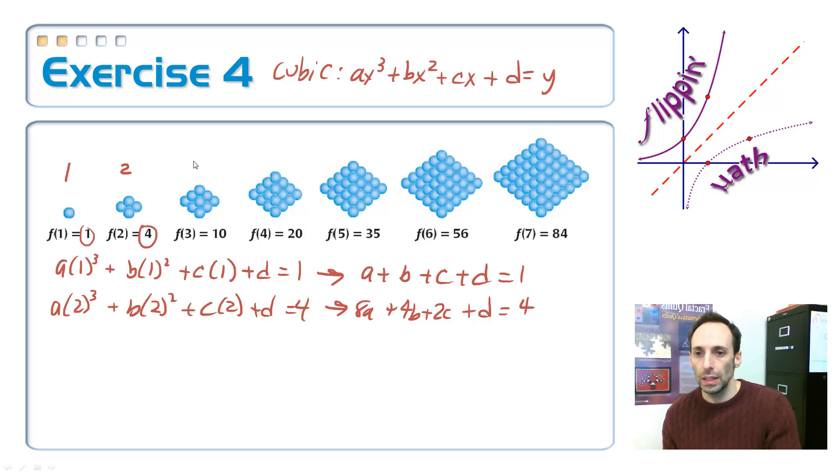For my next one, I'm plugging in 3. 3 to the third power is 27a, plus 3 squared is 9b, plus 3c, plus d is equal to 10. Last equation, because I have four parameters, a, b, c, and d, I need four equations in order to find them. I'm going to plug in 4 and get 20 as the answer. So 4 to the third power is 64a, plus 4 squared is 16b, plus 4c, plus d is equal to 20.